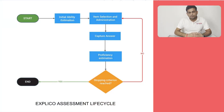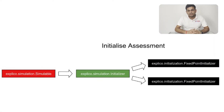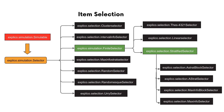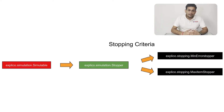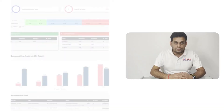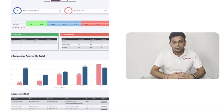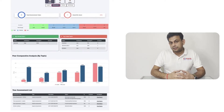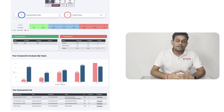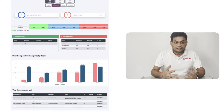Once the student logs into our platform, they receive a generic assessment based on their level or class. Our AI engine initiates assessment by applying equal theta to everyone, then starts item selection and ability estimation. Once the ability estimation is done, it stops the assessment and our recommendation engine generates recommendations for the individual student. All assessment and other data is stored in a centralized repository so it can be used for other students and to generate strong analytics against individual students.